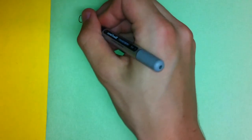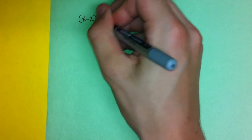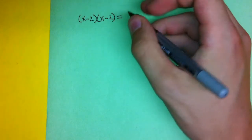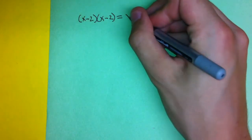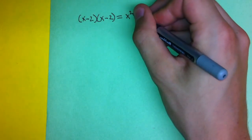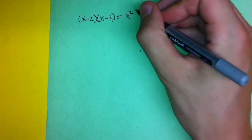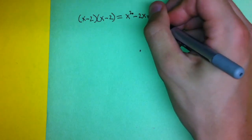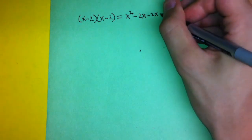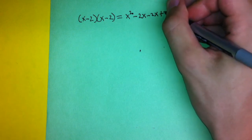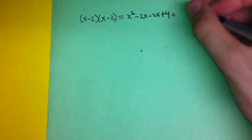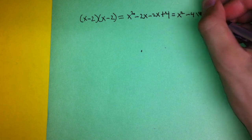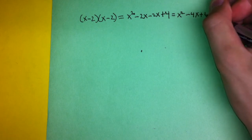The next problem is (x - 2)(x - 2). x times x equals x squared, and then we have x times negative 2 twice, so it will be minus 2x minus 2x. Negative 2 times negative 2 will be a positive 4, so that equals x squared minus 4x plus 4.